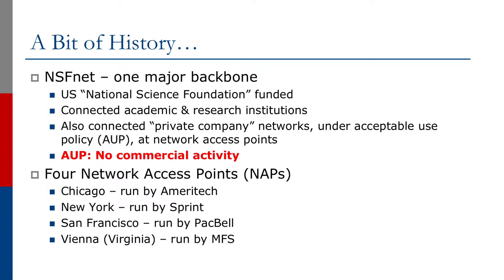There were four network access points: one in Chicago run by Ameritech, one in New York run by Sprint, one in San Francisco run by Pacific Bell, and one in Vienna, Virginia run by MFS. You'll note that these four operators were all major telecom providers in the United States.